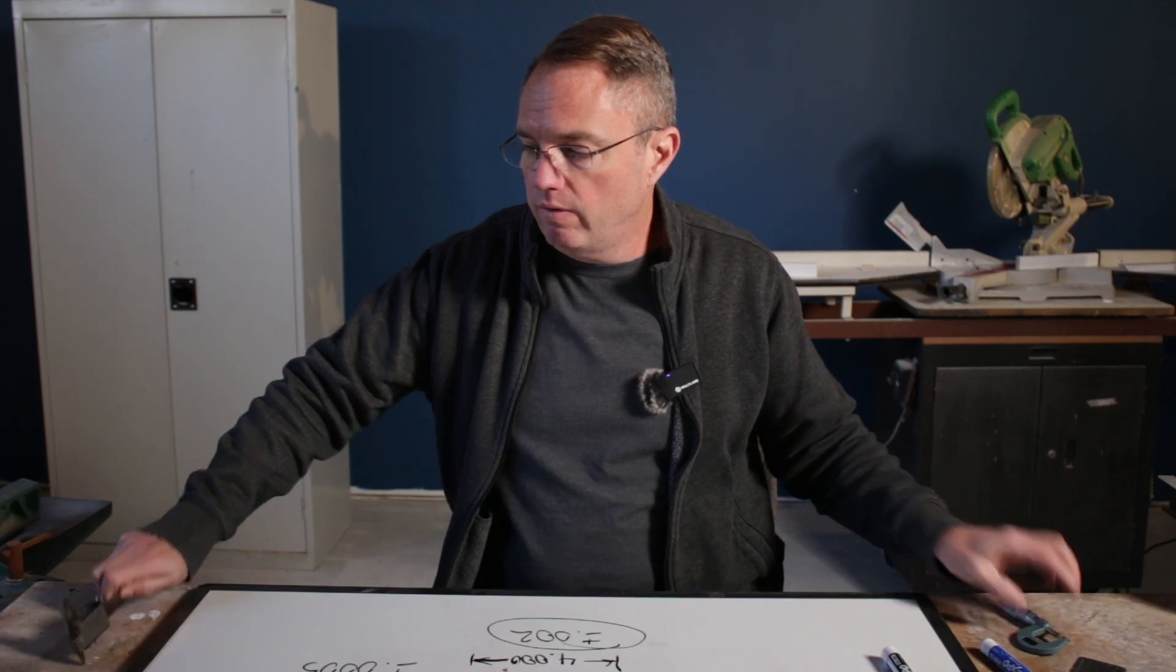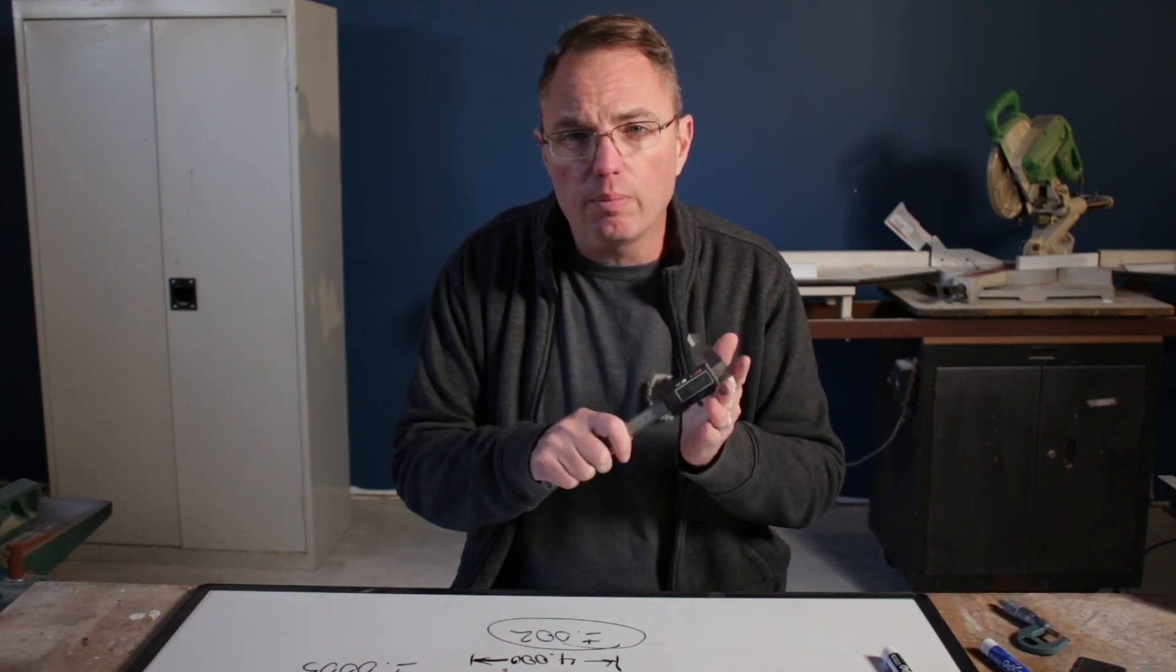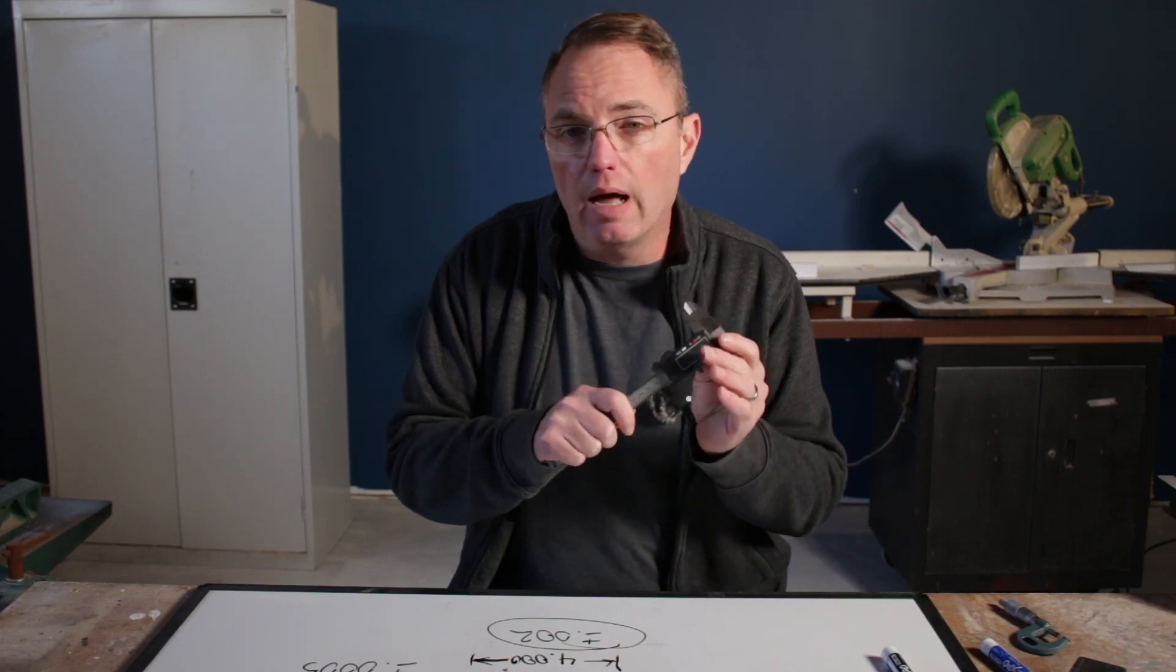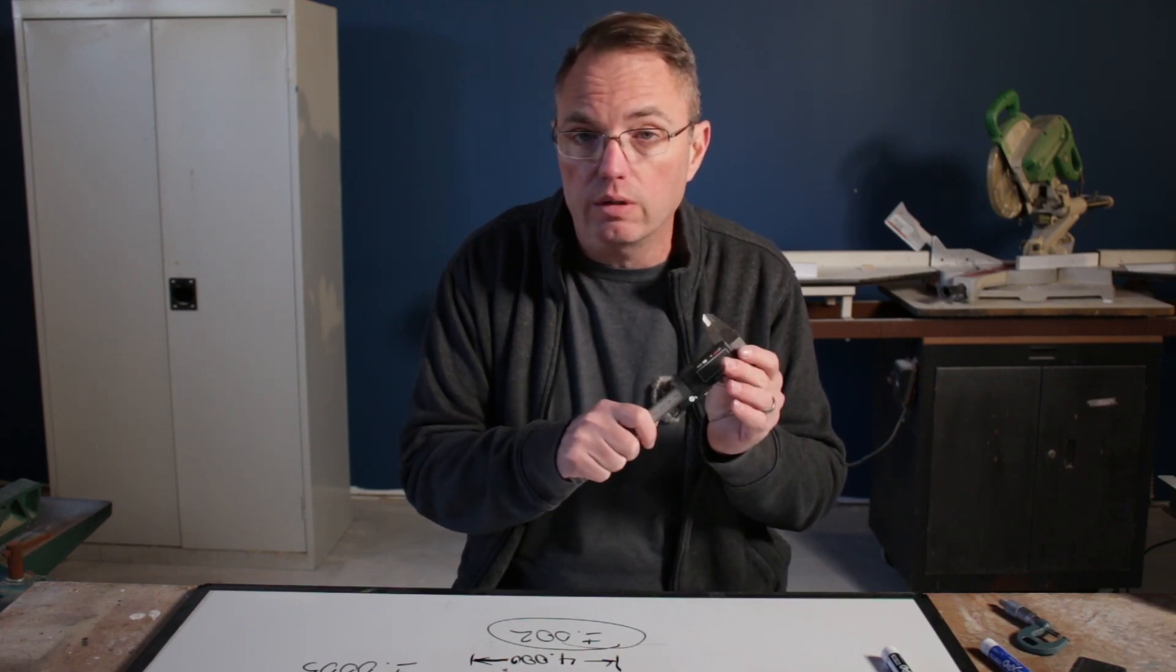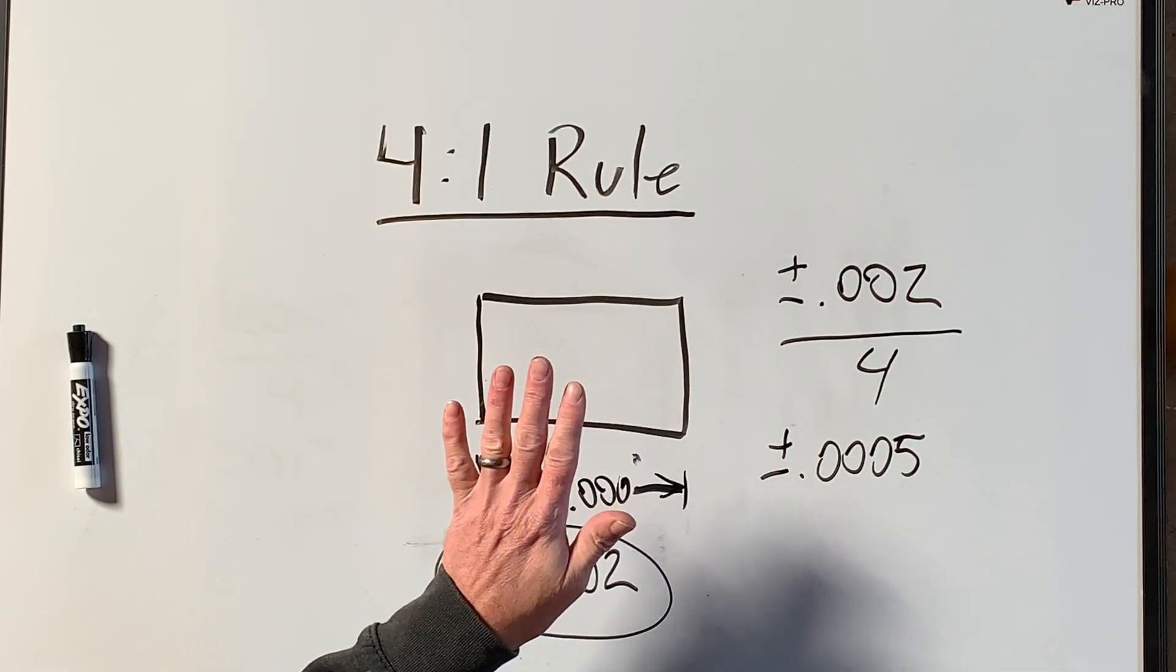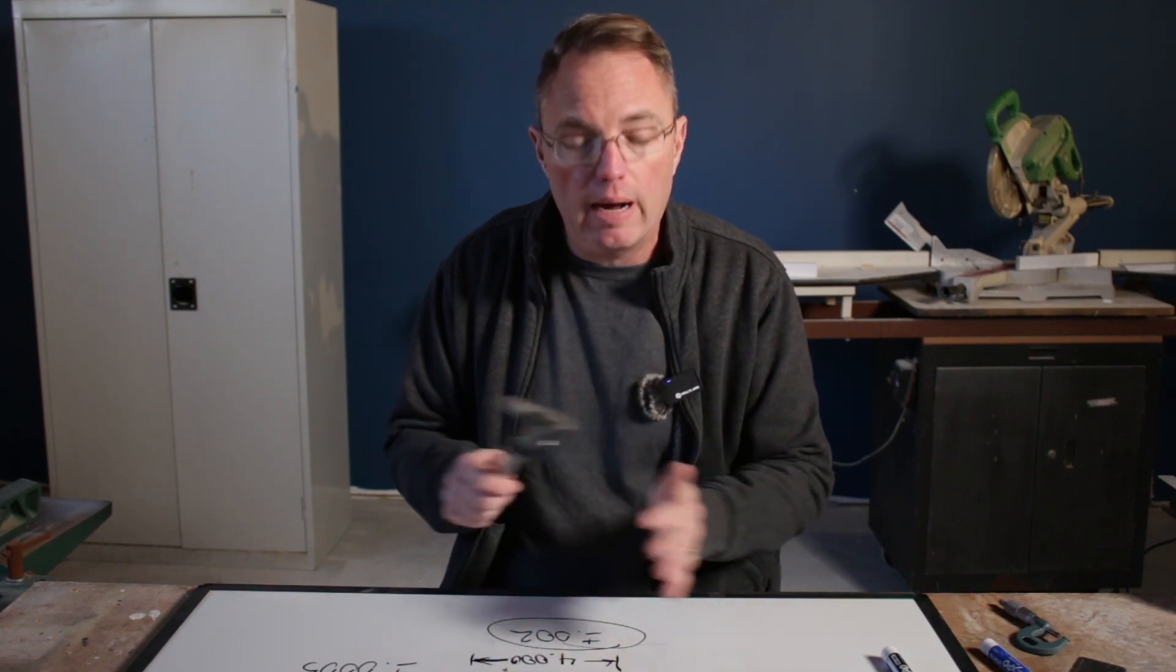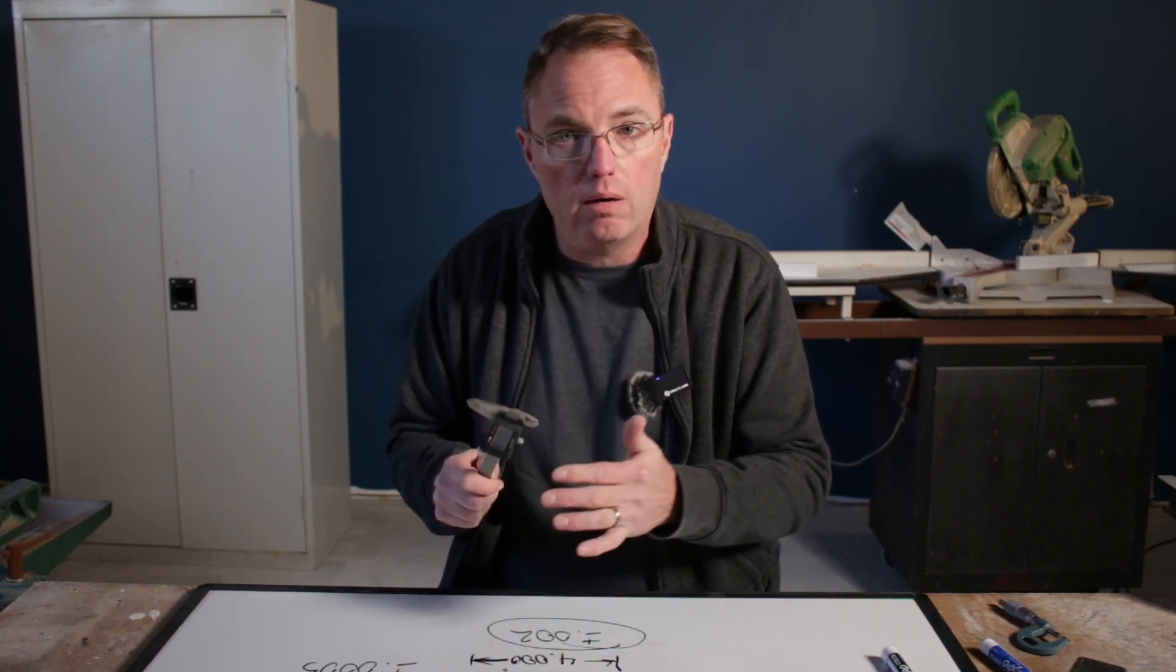But if we had, say, a caliper—often calipers will be like plus or minus a thousandth of an inch—so a caliper wouldn't be good enough. It wouldn't be accurate enough to measure this part correctly. There might be some errors and you might have that error make your part too big or too small.